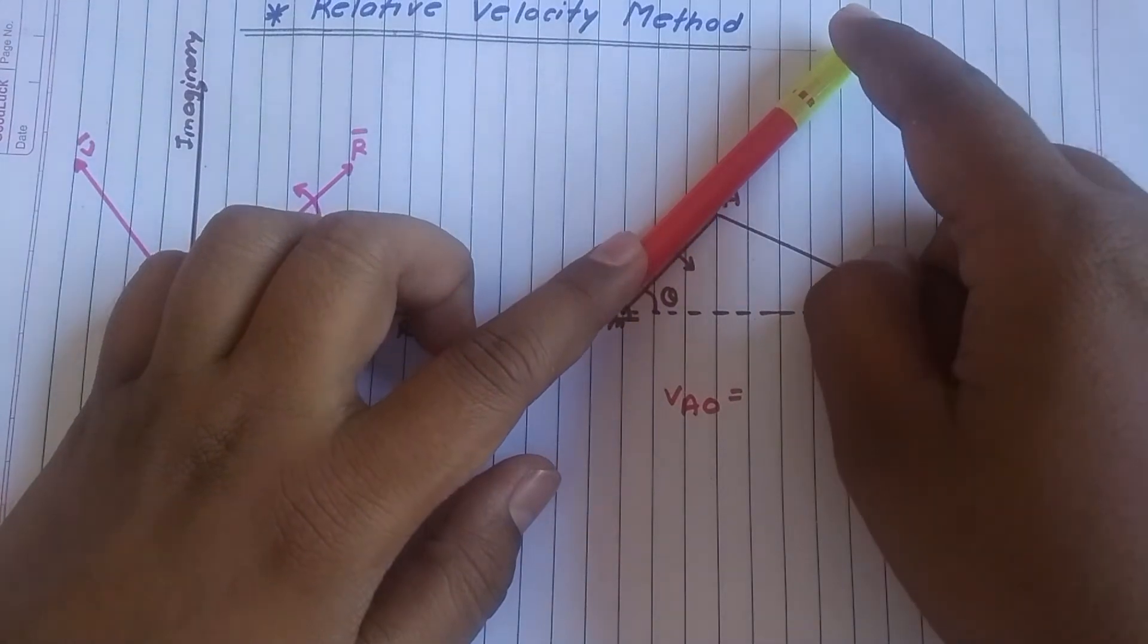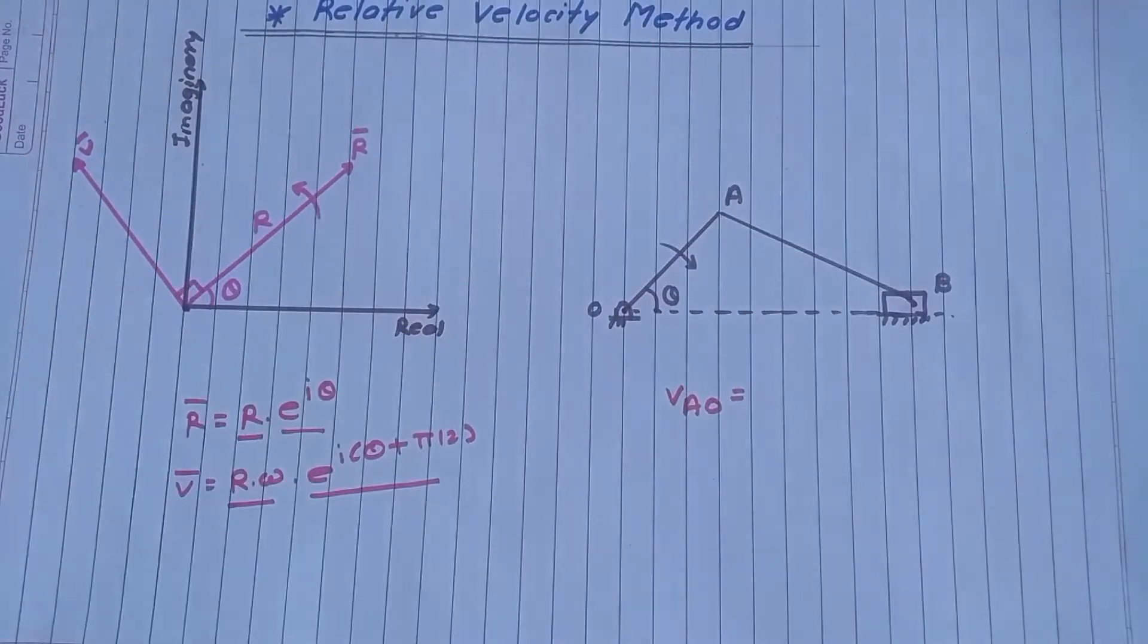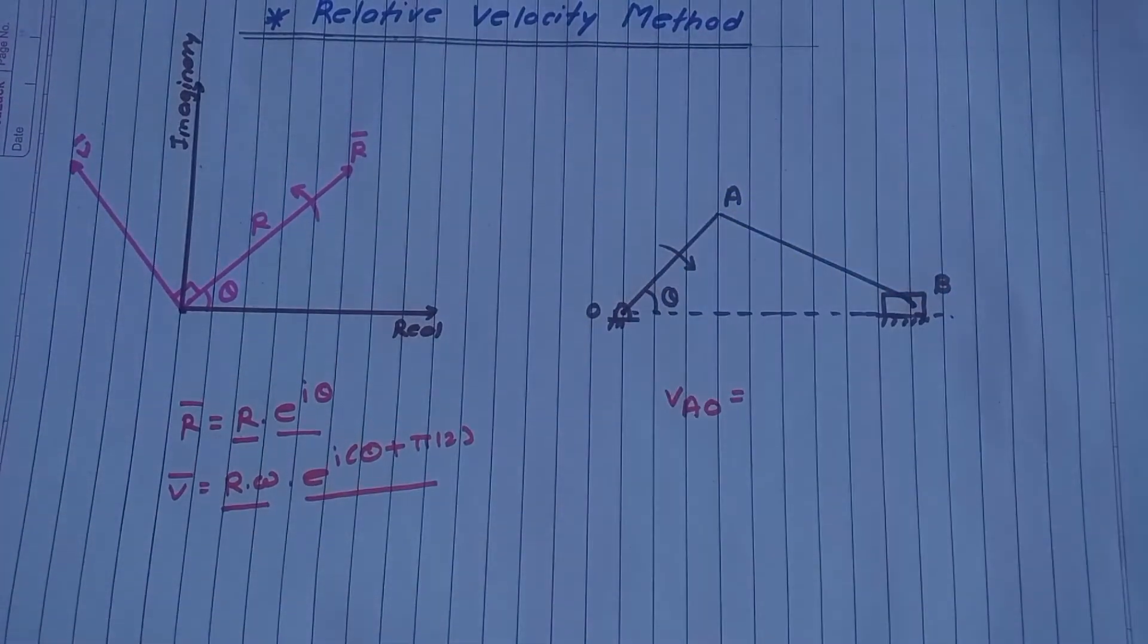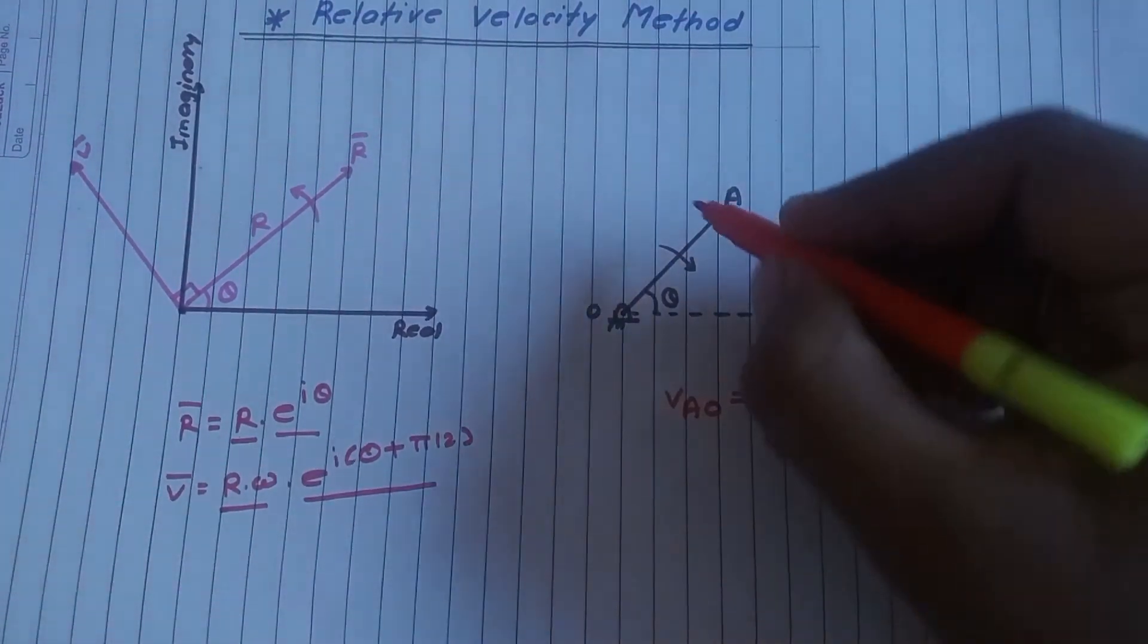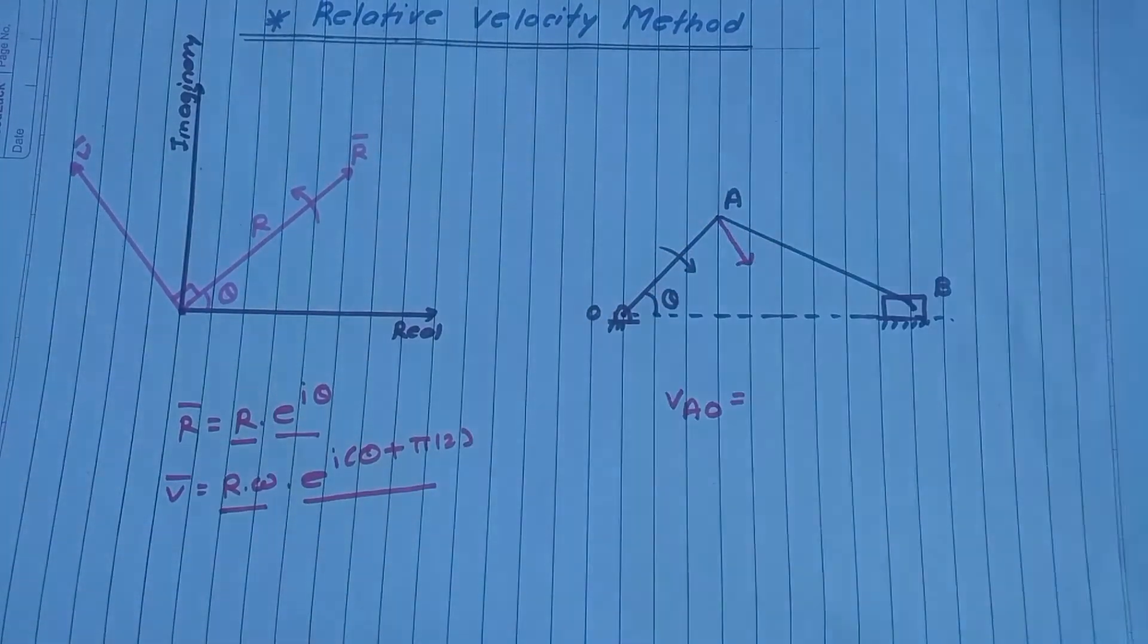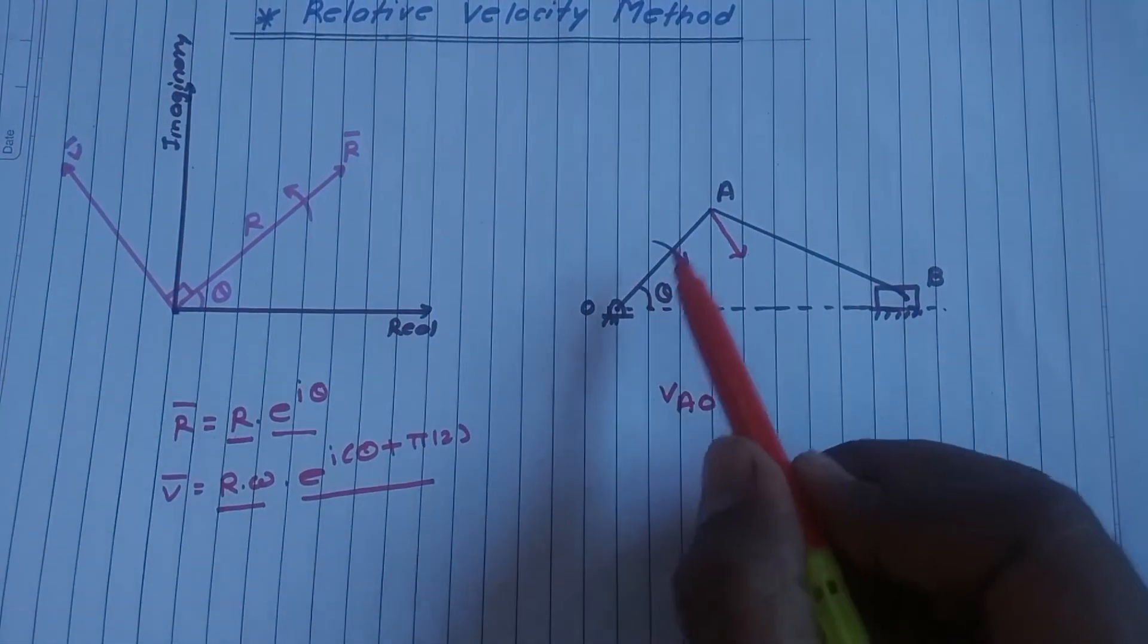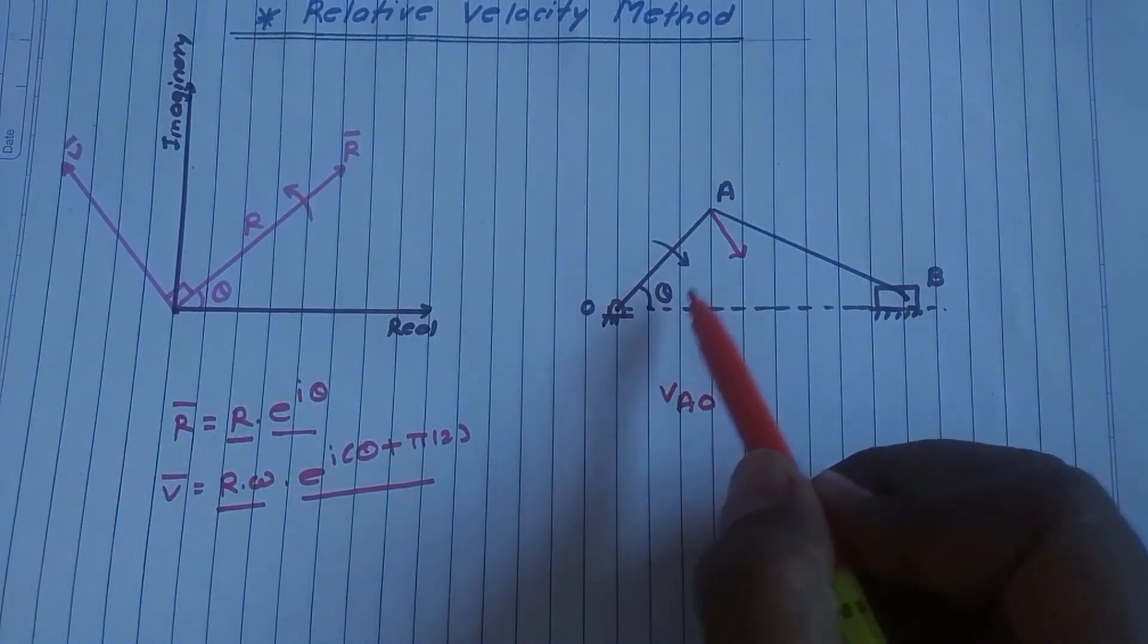In that case, velocity will be perpendicular to this link at point A. So point A is here, perpendicular in the direction of rotation of that link as it is rotating clockwise. So OA velocity will be perpendicular to this. In problem you will be given magnitude and direction of velocity of crank.